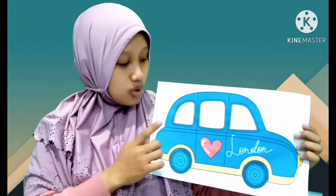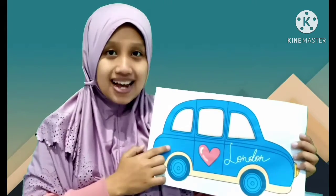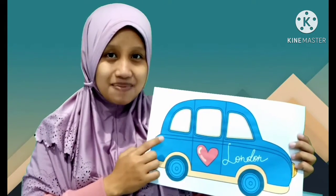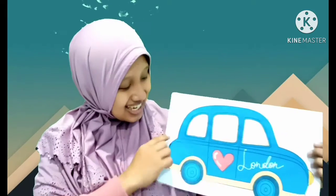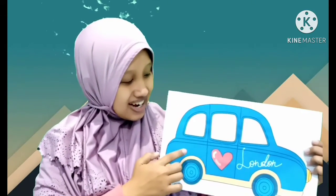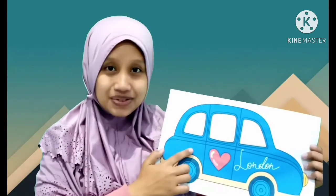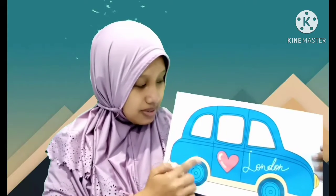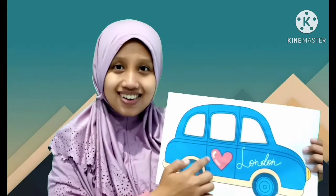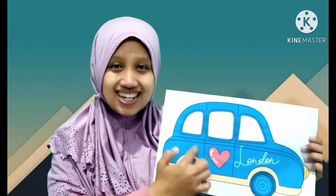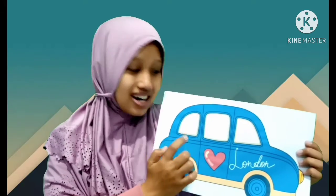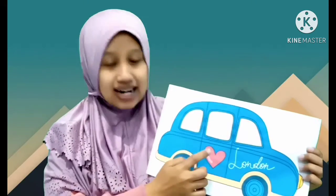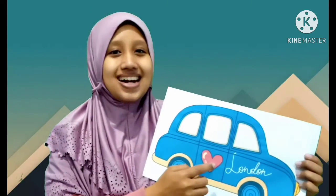Mobil yang Bu Ana pegang warnanya warna apa? Siapa yang tahu? Ini adalah warnanya warna biru. Rodanya juga berwarna biru. Dan di sini ada gambarnya. Ini adalah gambar hati. Warnanya warna merah.